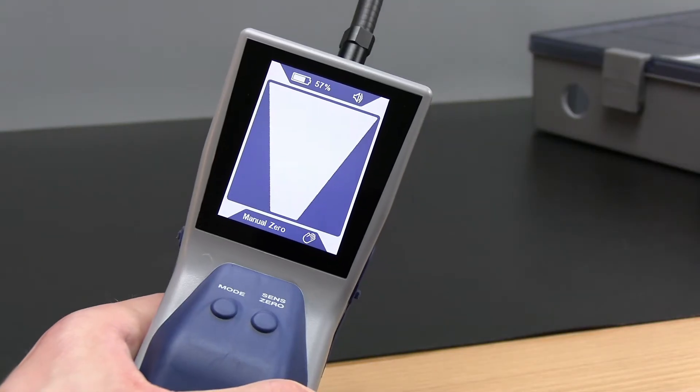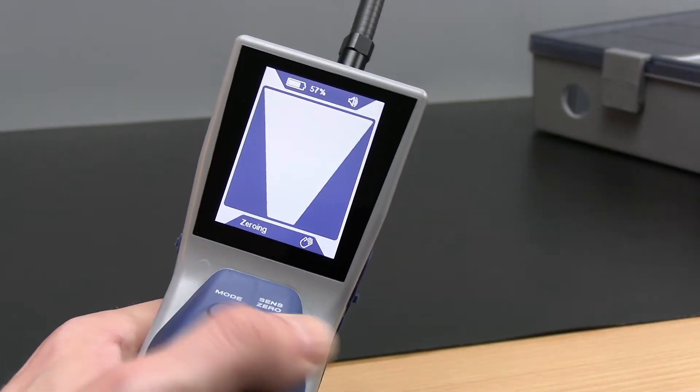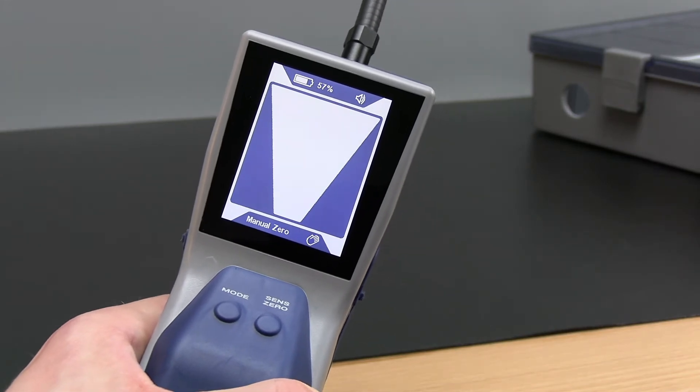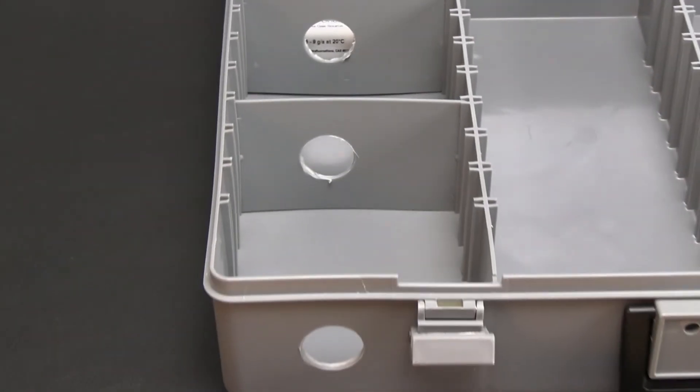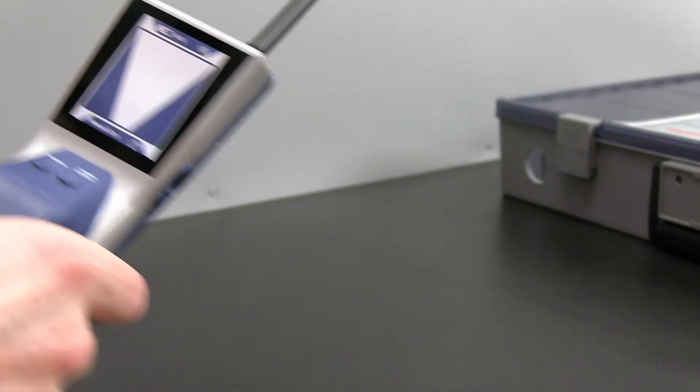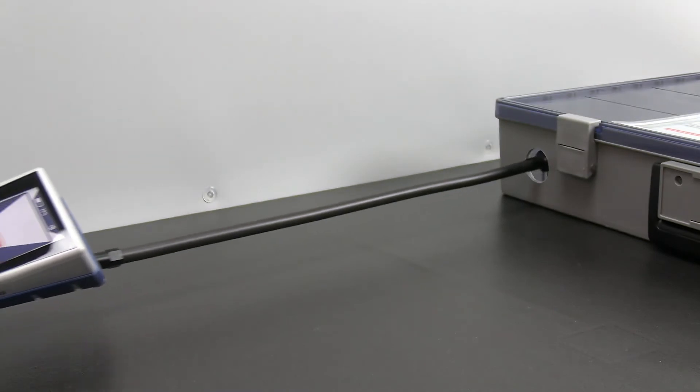Once a zero point is set, the unit will not alarm unless a higher concentration of refrigerant is detected. This helps you hone in on the source of the leak, searching for higher concentrations of refrigerant each time you manually zero the unit.